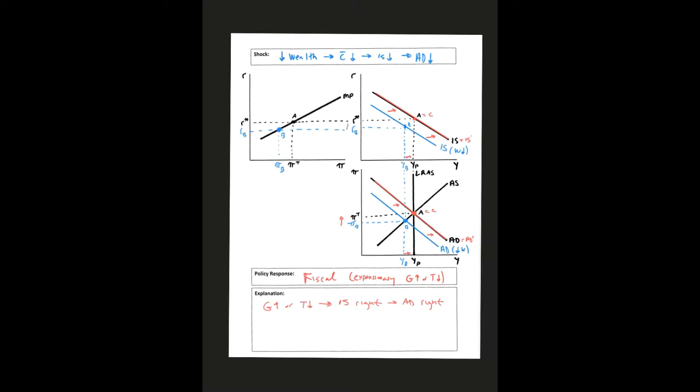And what that does is that brings interest rates back up to where they were before. And so with the MP curve, point C is just equal to point B. So we're just moving along the MP curve. So this would be fiscal policy of increasing government purchases or decreasing taxes.